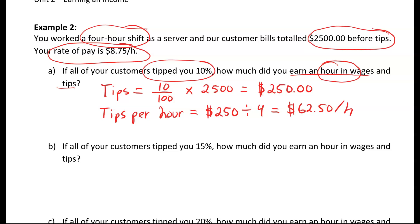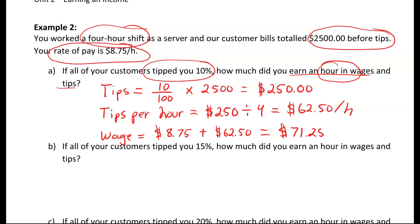The last part we need to figure out is what is our wage. Our wage equals our hourly rate of $8.75 — which is well below minimum wage now — plus our $62.50 in tips per hour, which adds up to $71.25 per hour. So with the tips and the hourly rate, this person is making $71.25 per hour, which is quite good.